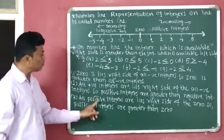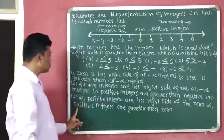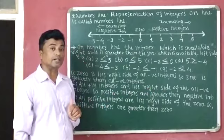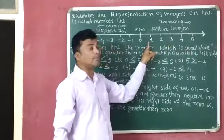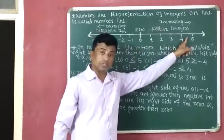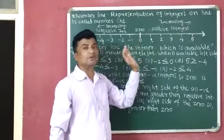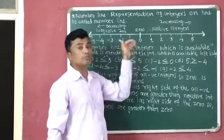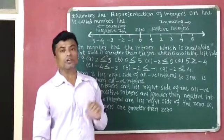Point number three: all positive integers are on the right side of zero, so positive integers are greater than zero. One, two, three, four, five — these are the positive integers and they are available on the right side of zero. So all positive integers are greater than zero.